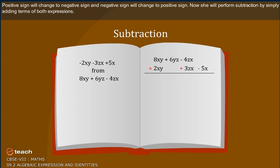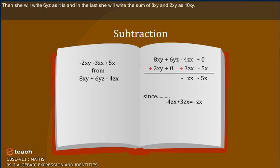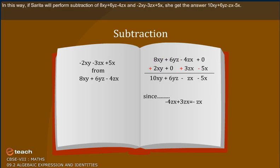Supposing the blank space as 0, she will write minus 5x as it is. She will write the sum of minus 4zx and 3zx as minus zx, as 1 is supposed to be there. Then she will write 6yz as it is. And in the last, she will write the sum of 8xy and 2xy as 10xy. In this way, Sarita performs the subtraction and gets the answer: 10xy plus 6yz minus zx minus 5x.